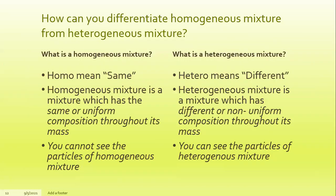How can you differentiate a homogeneous mixture from a heterogeneous mixture? These are the different characteristics that distinguish the two kinds. Homo means same, so a homogeneous mixture has the same or uniform composition throughout its mass. Hetero means different, so a heterogeneous mixture has different or non-uniform composition throughout its mass, and you can see the particles of a heterogeneous mixture.